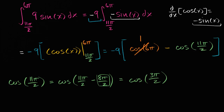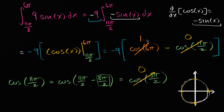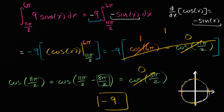If we imagine the unit circle — starting at zero, going to π/2, then π, then 3π/2 — that's this point on the unit circle. Cosine is the x-coordinate, and at 3π/2 that x-coordinate is zero. So we get one minus zero; everything in the brackets evaluates to one. We have negative nine times one, which is negative nine — that's what this definite integral evaluates to.